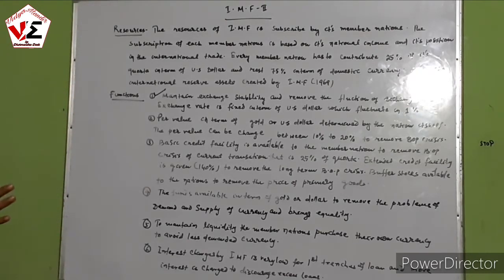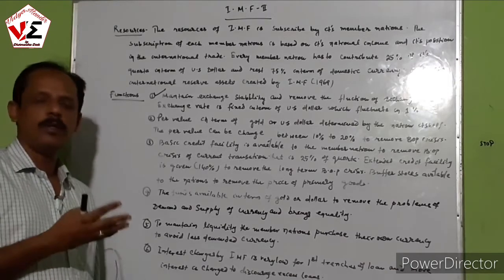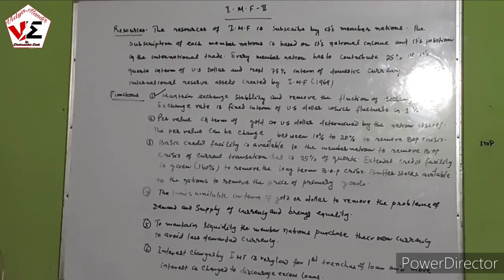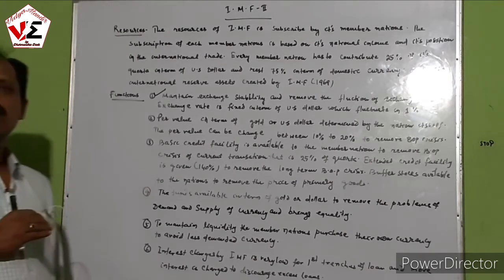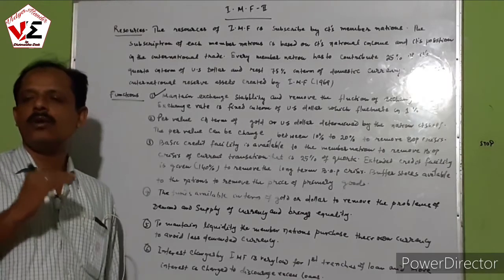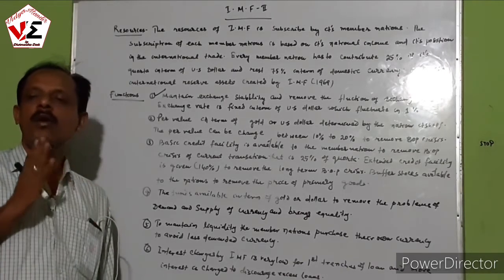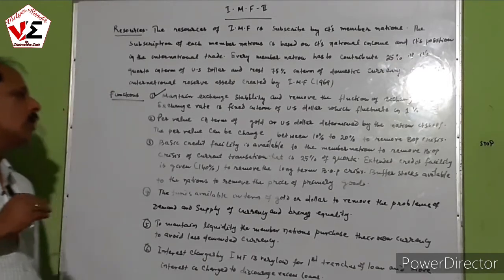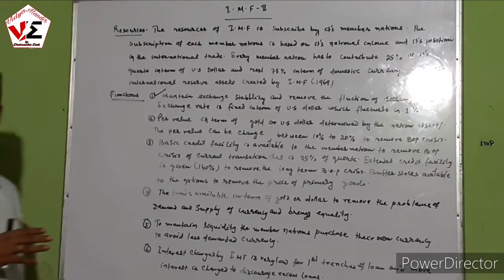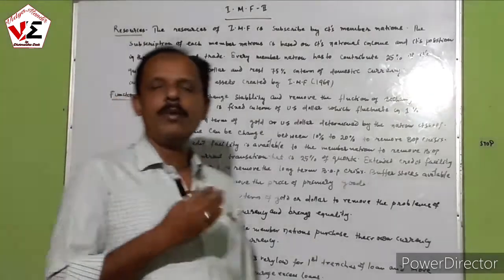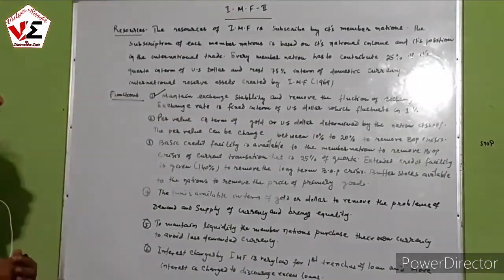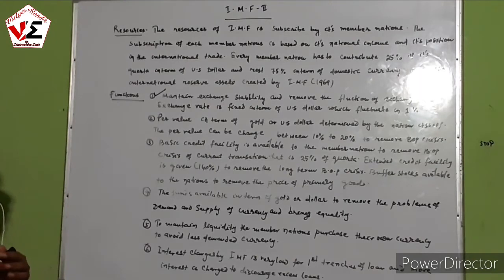Basic credit is 25% of the quota. Extended credit facility is given up to 140% of the quota to remove the long-term balance of payment crisis. Buffer stock is available to developing nations that are exporting primary products, to stabilize the price of those primary products.